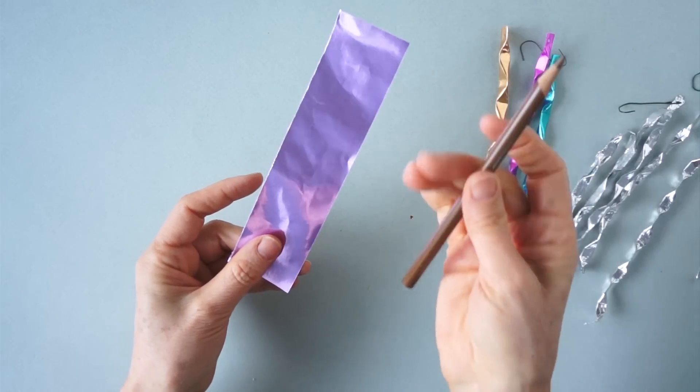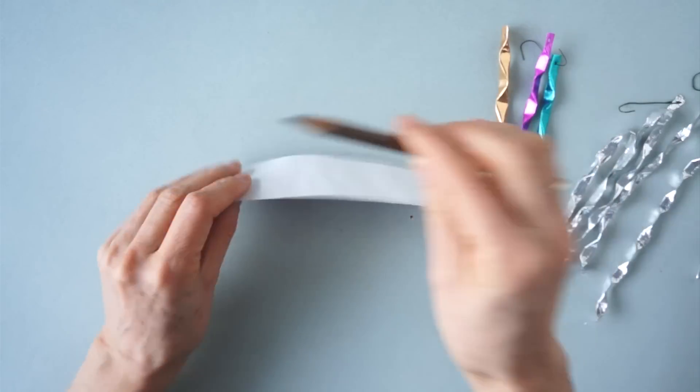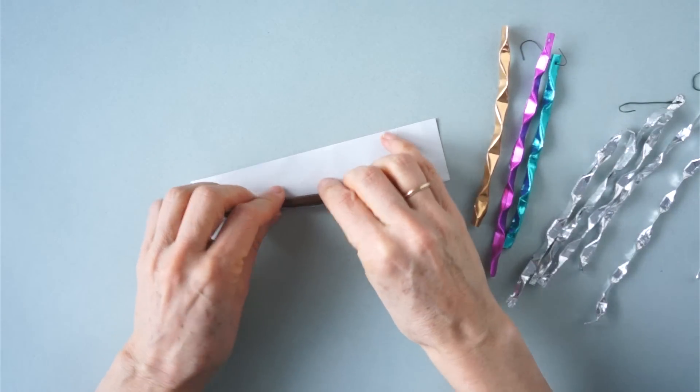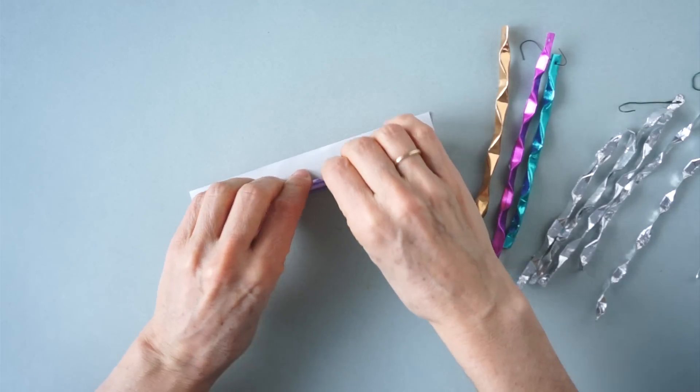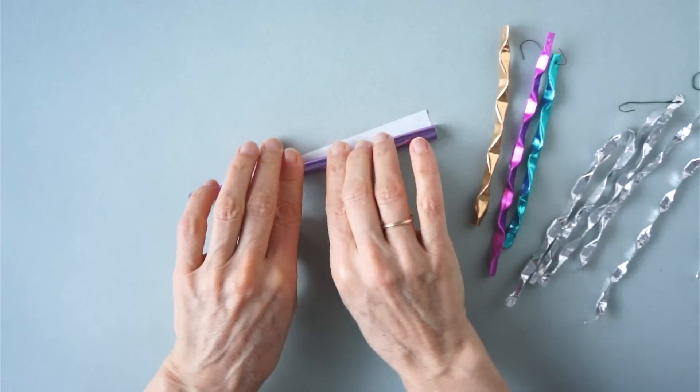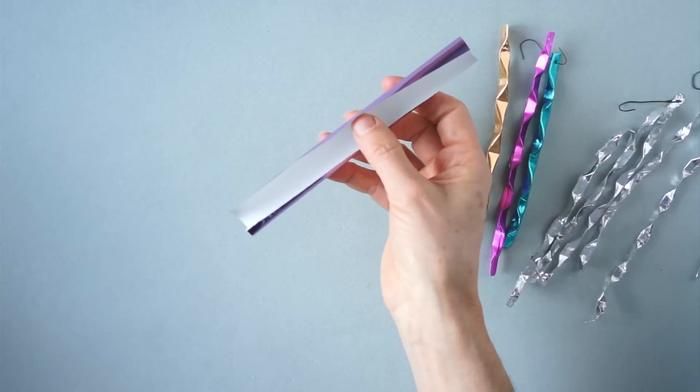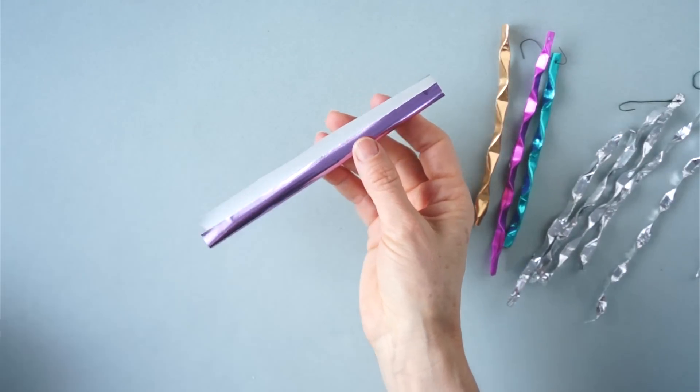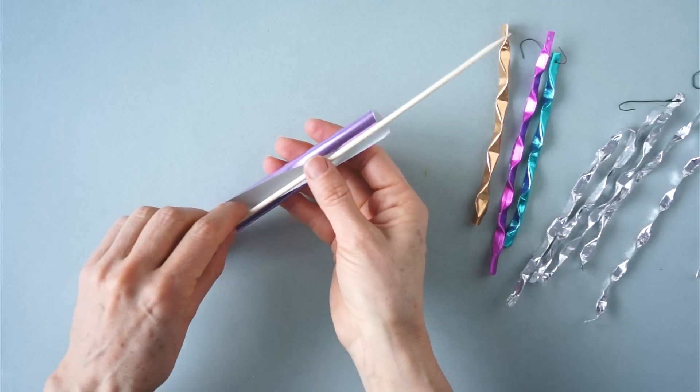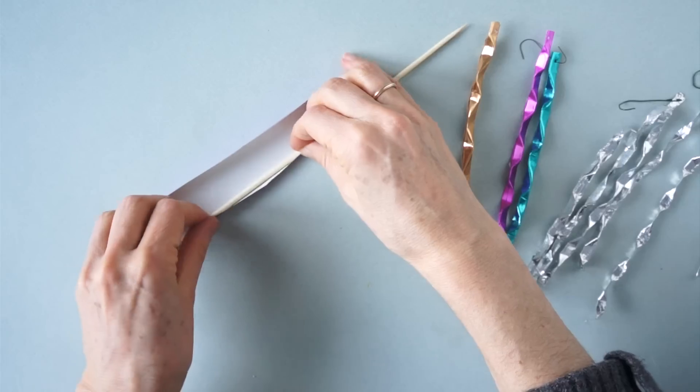Since this paper is thicker, we can start rolling by using a pencil, so that we teach the paper to curl. And once it is curled we can use the skewer and repeat the process.